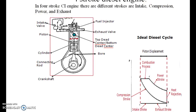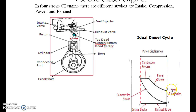This is the detailed working of the 4-stroke diesel engine. In this diesel engine, from 1-2 intake stroke is there, from 2-3 compression stroke is there, from 3-4 combustion stroke is there, from 4-5 power stroke is there, from 5-6 heat rejection is there, and from 2-1 exhaust stroke is there.